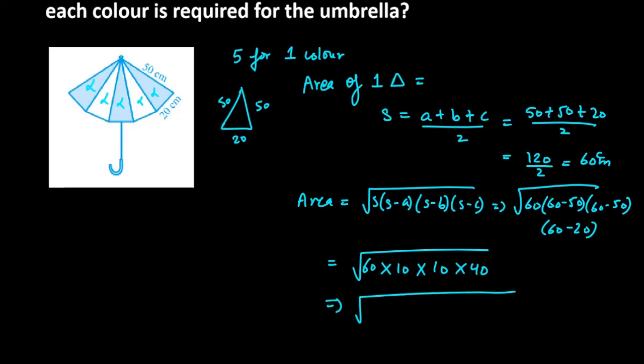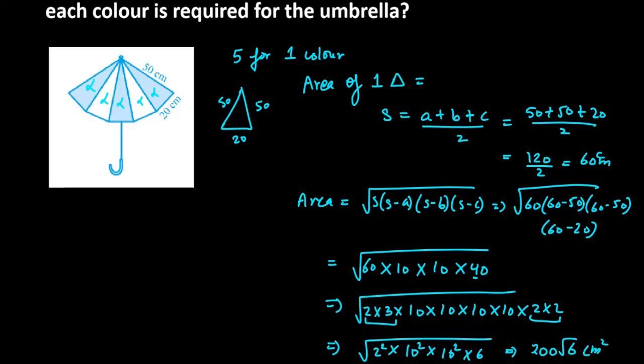So you have 10, 10, 10. How can you reduce? 6 can be written as 2 into 3. And how many times do you have it here? 4 times. And 4 is 2 into 2. So you have 2 square, 10 square and 10 square. Then you have 6 in the end. So you can cancel root and square with all the values. And you will get 200 root 6, and the unit is centimeter square.